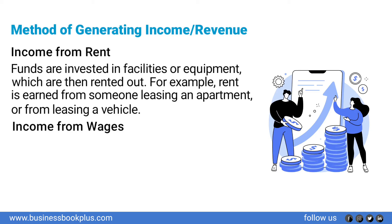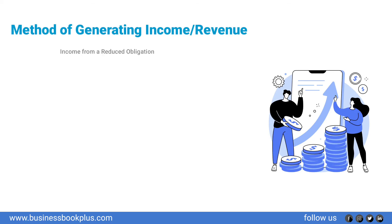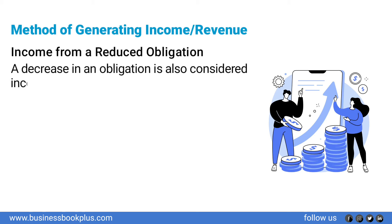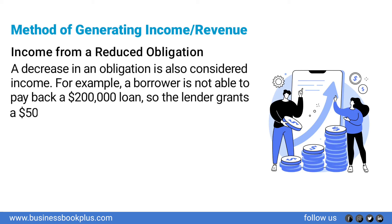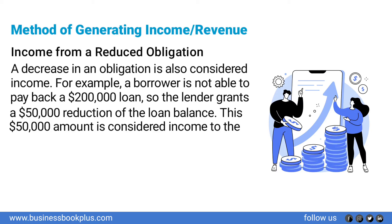Income from wages — an individual works for a business entity and is paid for hours worked. Income from a reduced obligation — a decrease in an obligation is also considered income; for example, if a borrower cannot pay back a $200,000 loan and the lender grants a $50,000 reduction of the loan balance, that $50,000 is considered income to the borrower.